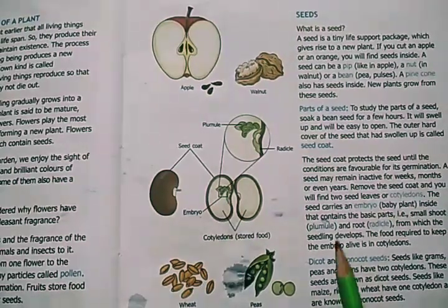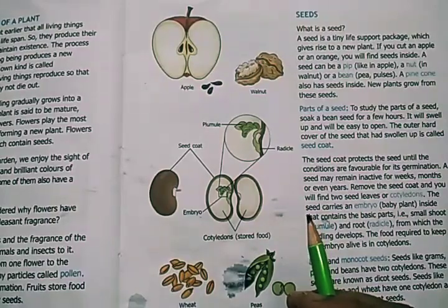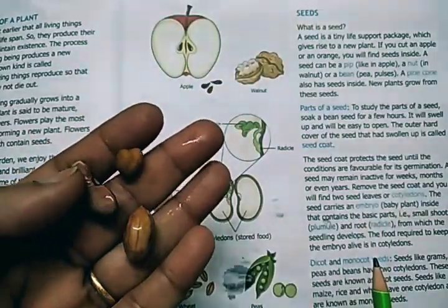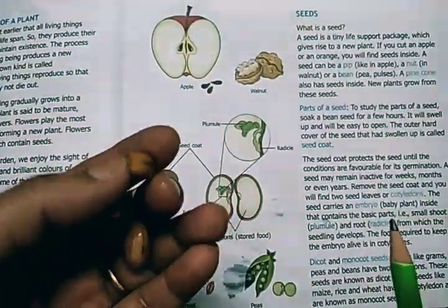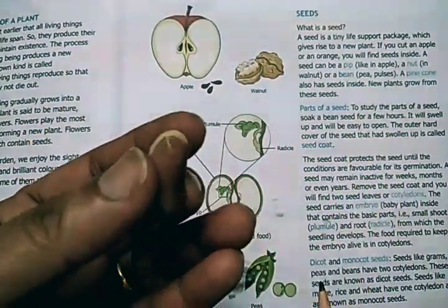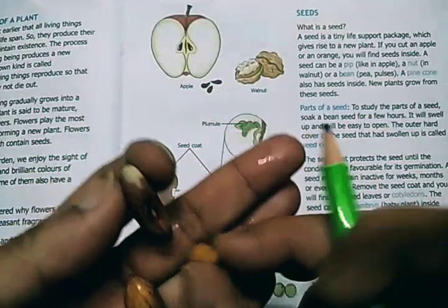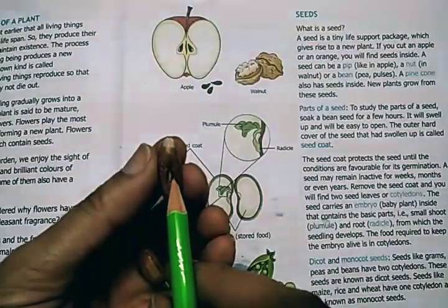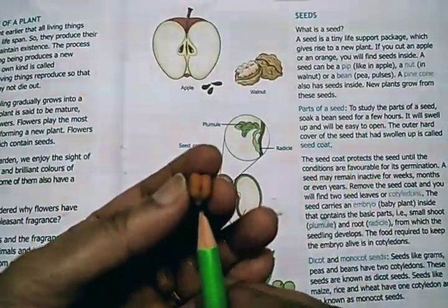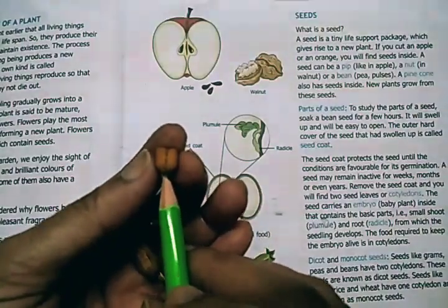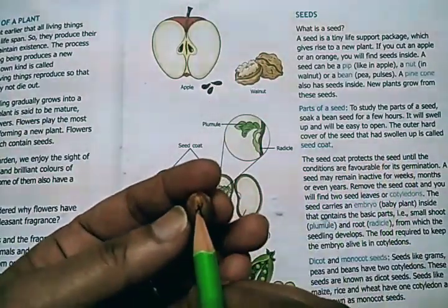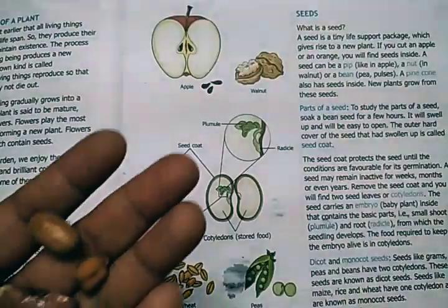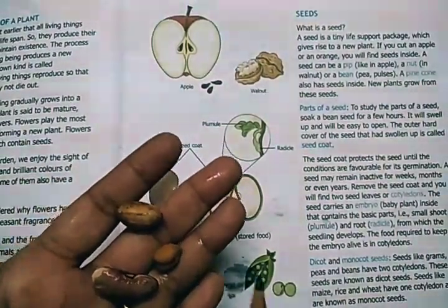Here I have a few seeds soaked so that we can open them up and study the inside structure, because when the seed is dry it's very difficult to open it up. Here I have a rajma or kidney bean seed, a groundnut seed, and a gram seed or chana. You can see a small hole in each seed — this is called the micropyle. The seed absorbs or soaks up water through this micropyle when we soak it.